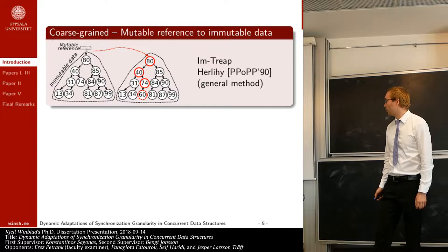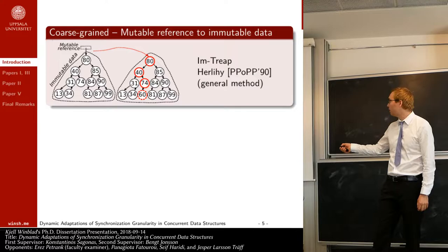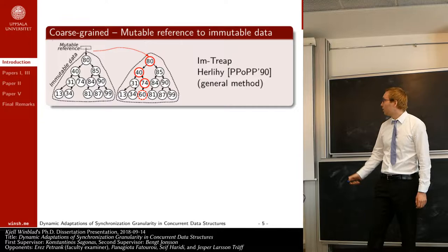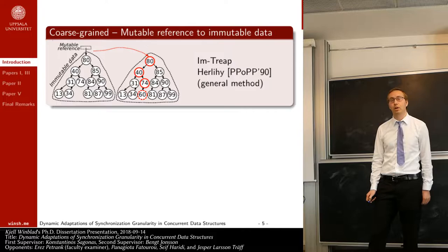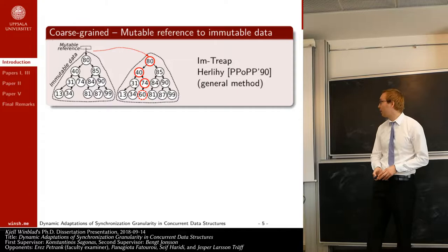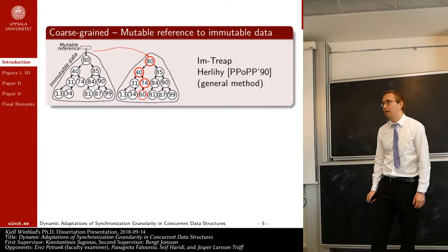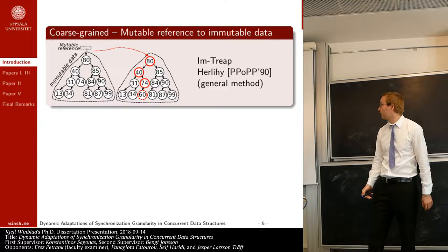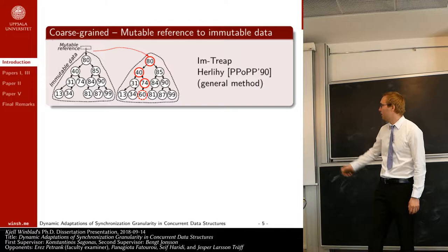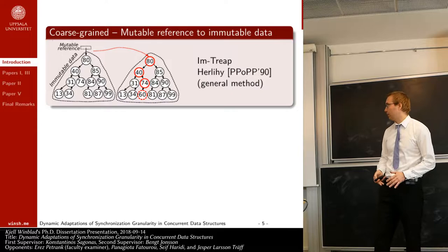Let's look at an example that uses coarse-grained synchronization granularity. I call this the imp tree, based on a general method proposed in 1990. Here we have a mutable reference pointing to an instance of an immutable data structure — in my case an immutable tree, which is a balanced binary search tree. An update operation takes a snapshot by reading the mutable reference, and based on this snapshot it creates a new instance reflecting the update, illustrated here where item 60 is inserted.